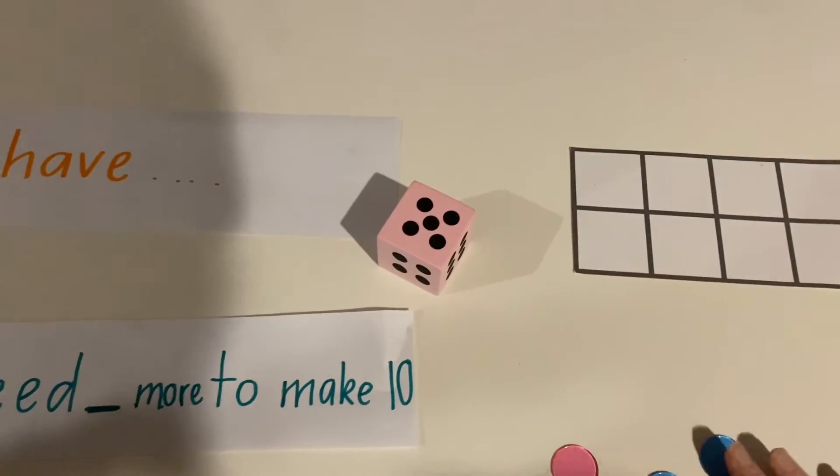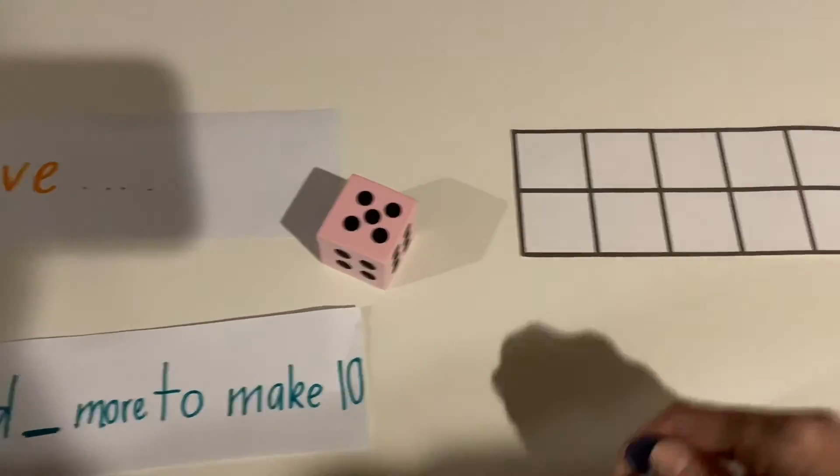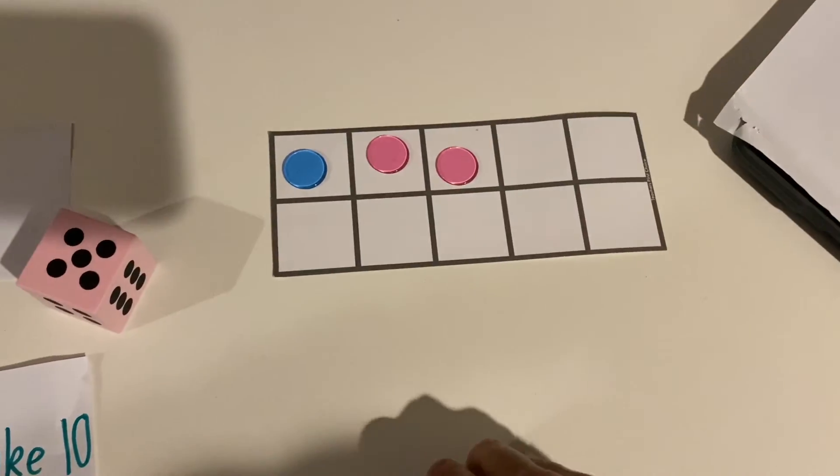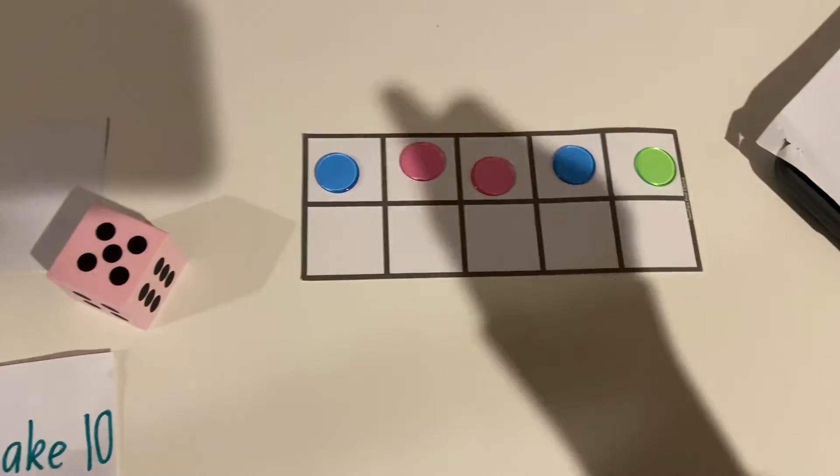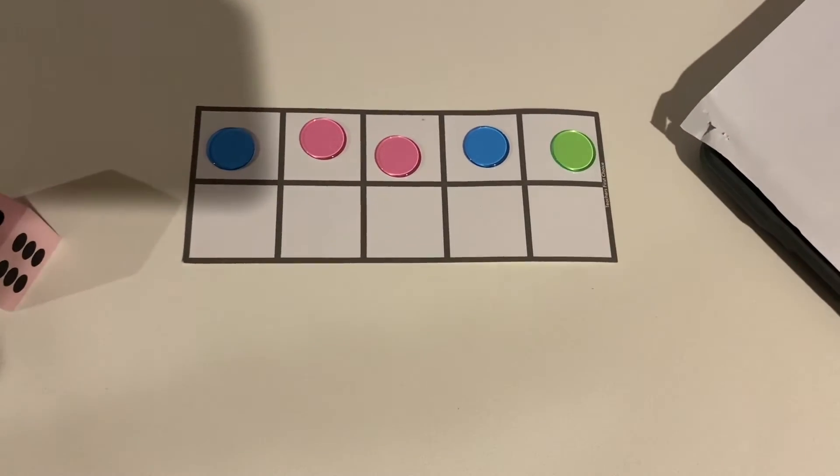Alright your turn. Five. Okay so I know when I put five counters on here the whole top row is going to be filled. And I will have five. So I've got five and I need five more to make ten.